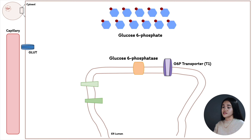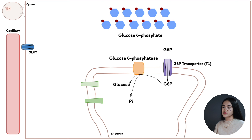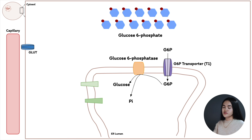Glucose-6-phosphate is produced in the cytosol, but the enzyme glucose-6-phosphatase is located in the endoplasmic reticulum — it's a membrane-bound integral membrane protein. So glucose-6-phosphate must be transported into the ER lumen through a glucose-6-phosphate transporter called T1. Inside the lumen it is hydrolyzed, producing glucose and inorganic phosphate. This reaction occurs in the ER lumen rather than the cytosol because glucose-6-phosphate is also involved in glycolysis, which occurs in the cytosol, so the two pathways need to be separated.